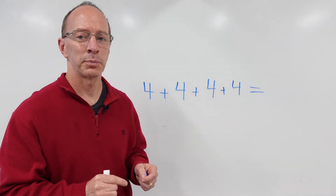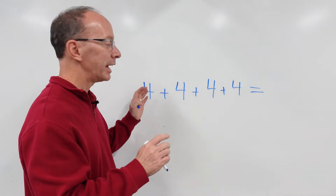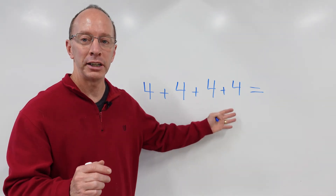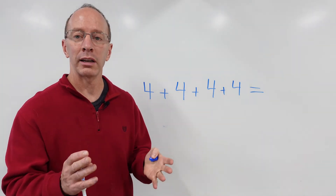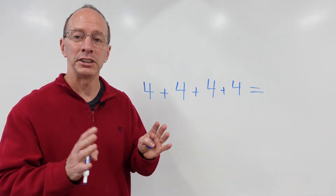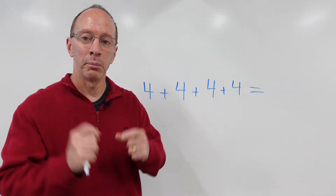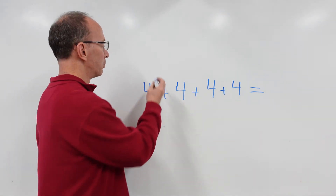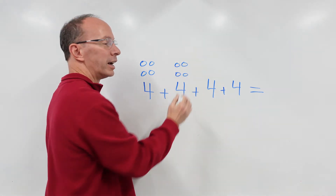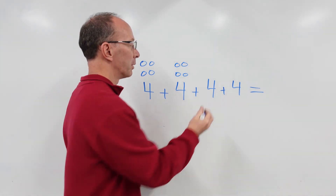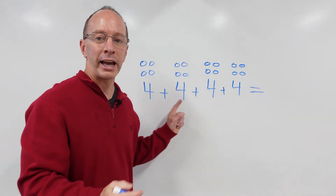Here we are on our last problem — one you might have in your workbook. They've told you how many will be in each group and want you to draw a picture. I always tell my students: draw it out, it's the best way to find the answer and get started with mental math. Let's draw four circles in each group: one, two, three, four — one, two, three, four — one, two, three, four — one, two, three, four. Say the numbers as you draw them, it really helps your mind.